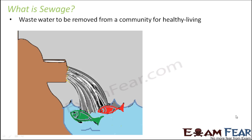Sewage is waste water that needs to be removed from a community for healthy living. It is water which gets contaminated with different types of solid and liquid wastes. Its composition includes human excreta, organic matter, and microbes — not only pathogens but also some good microbes which are heterotrophic in nature, meaning they are dependent on other living organisms and can kill some of the pathogens.